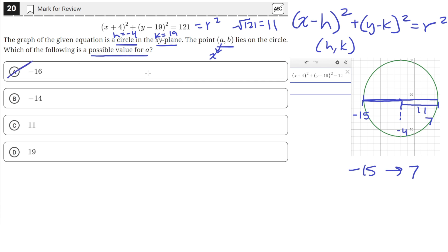Negative 16 is not in this range, since it's to the left of negative 15. Negative 14 is in this range, since it is greater than negative 15 but less than 7. 11 is greater than 7, so it is not in the range. And 19 is greater than 7, so it is not in the range. Which means B is the correct answer.